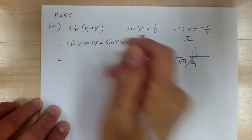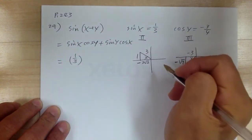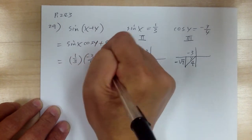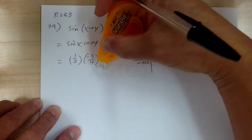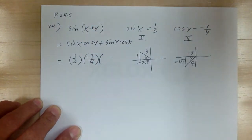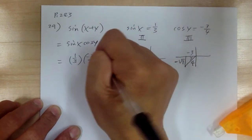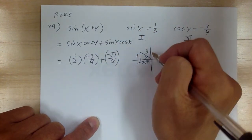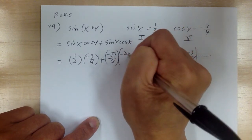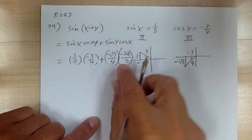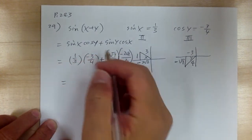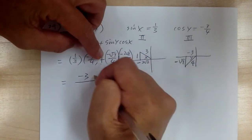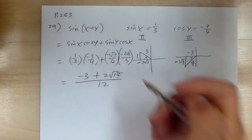Let's go ahead and evaluate. Sine x is 1 over 3. Cosine y is negative 3 over 4. When you do this, you will always have a common denominator — make sure of that. This is plus. Sine y is negative square root of 7 over 4, and cosine x is negative 2 square root of 2 over 3. This gives you negative 3, and then negative times negative gives you plus 2 square root of 14, all over 12.